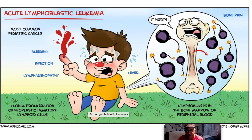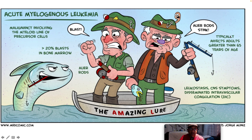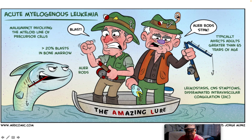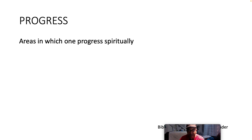Acute myelogenous leukemia is a malignancy involving the myeloid line of precursor cells. The tip-off is over 20% blasts in the bone marrow, and the classic finding is the Auer rod. It typically affects patients greater than 65 years of age. Complications include leukostasis, CNS symptoms, and DIC — disseminated intravascular coagulation.